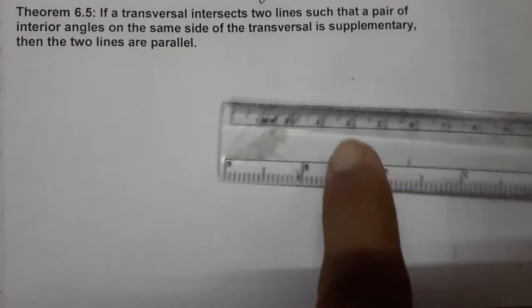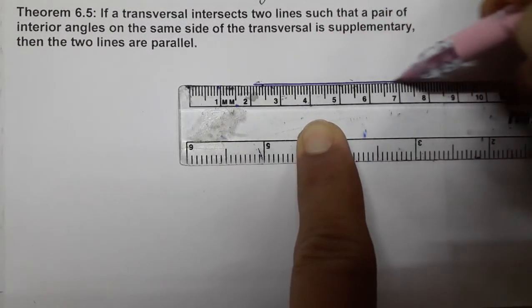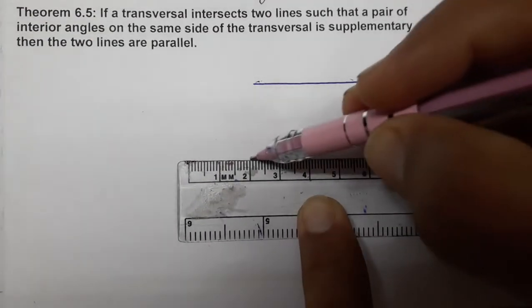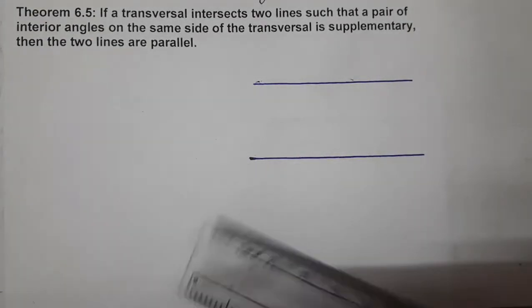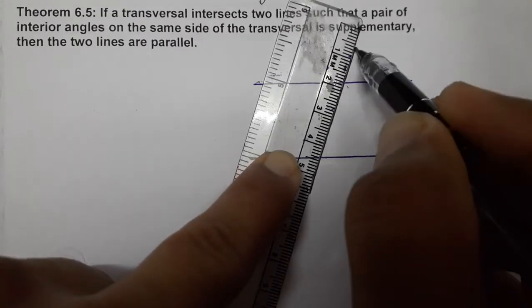So a transversal intersects two lines. Now two lines are given. They are not parallel but we'll make them just like parallel only. So these are the two lines and a transversal intersects them. This is a transversal.